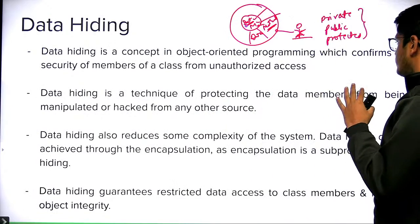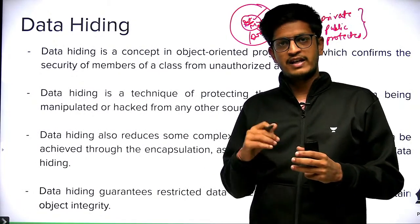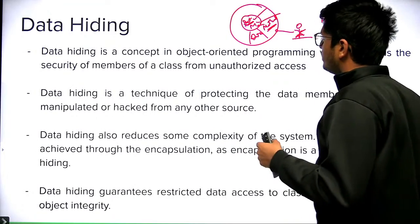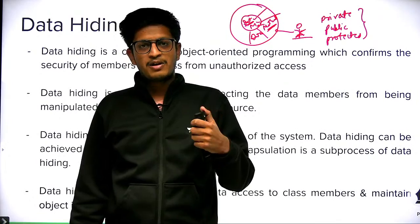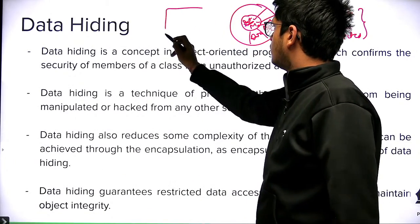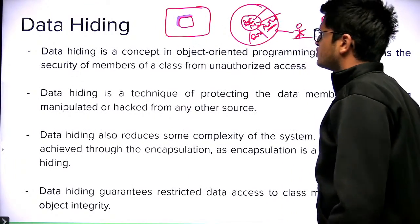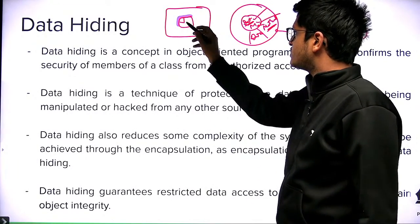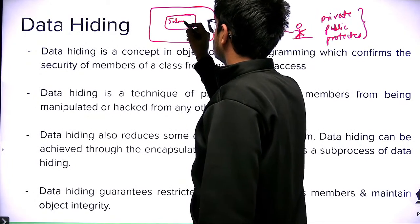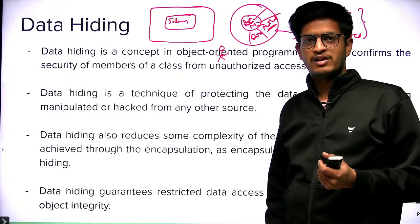Data hiding is a concept in OOP which confirms the security of members of a class from unauthorized access. Only the members of the class itself can access that particular data. A good example is banks. You do not have access to all data members. In a bank, there will be an account object with some data members. Outside world does not have the access to directly modify the balance value — no one can do this.